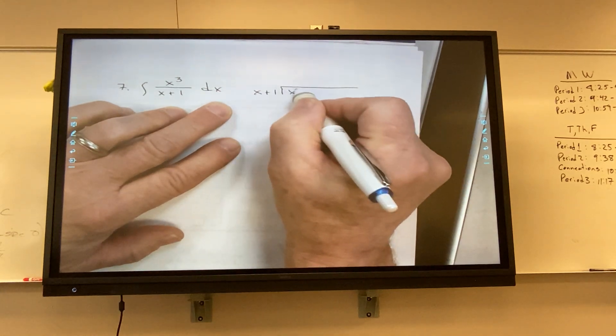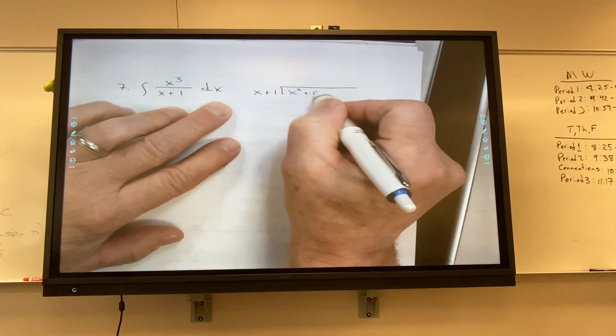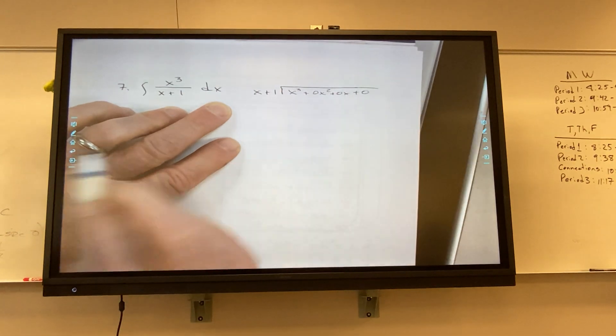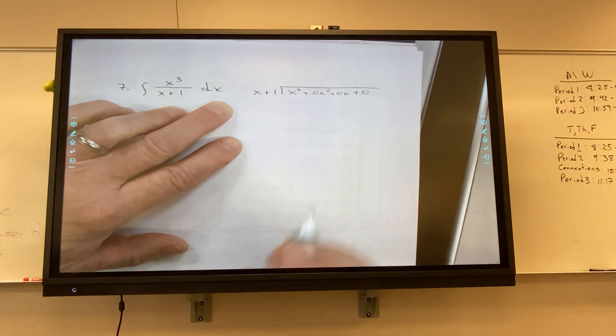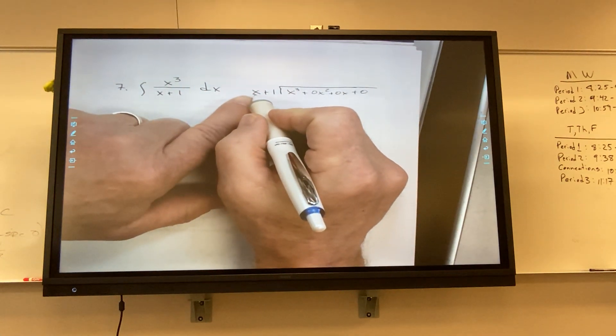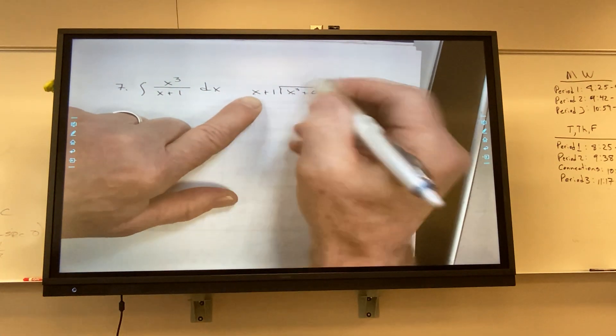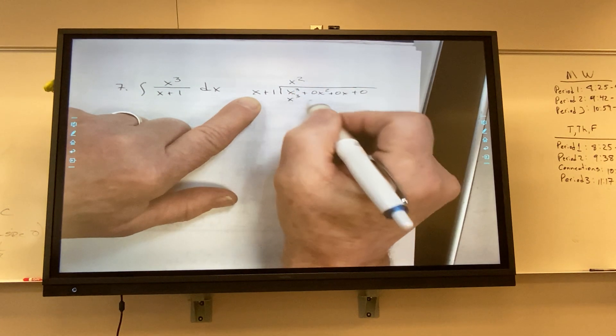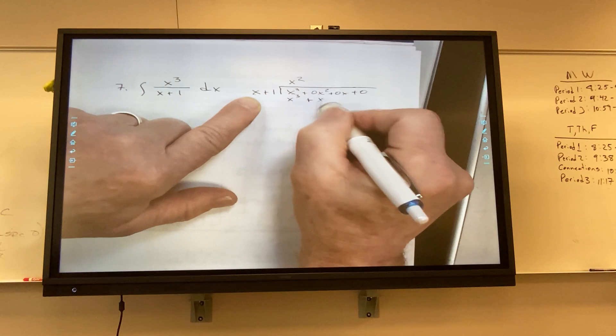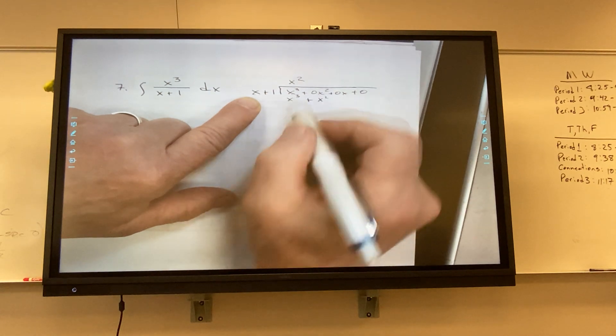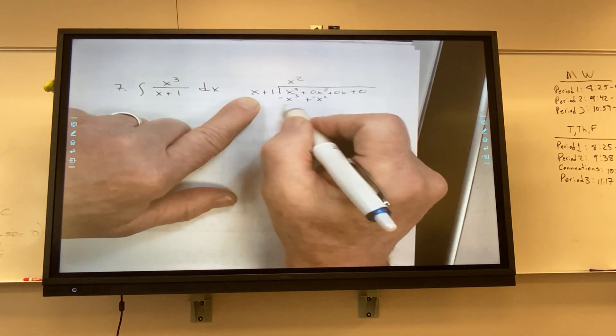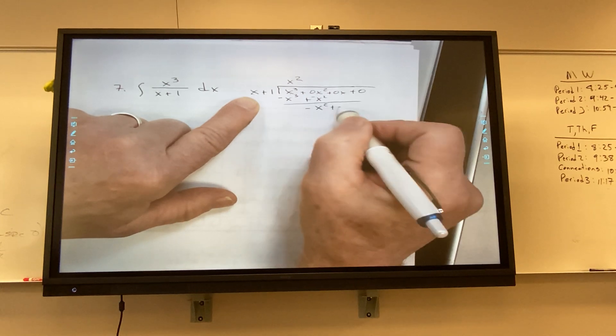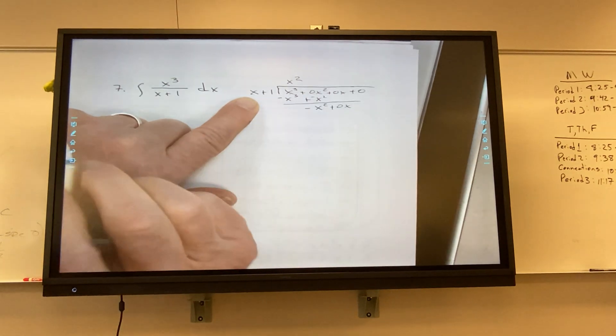Two terms, binomial means two, okay. So x plus one here, x cubed here, right? I can say plus zero x squared plus zero x plus zero, right? You're okay with all those zeros. So what can I multiply x by to make it x cubed?